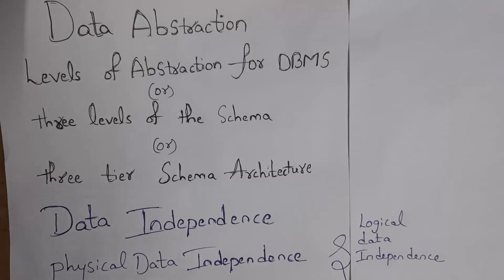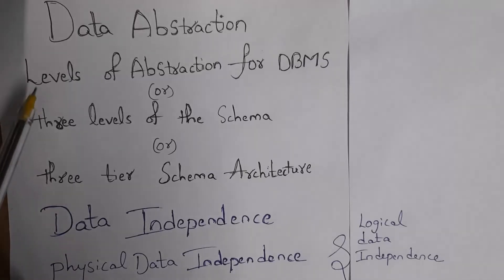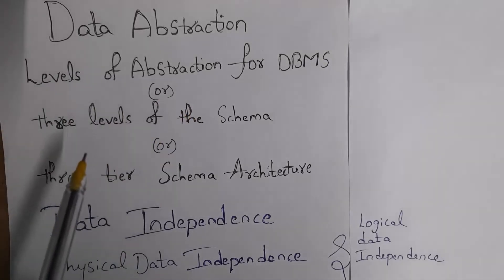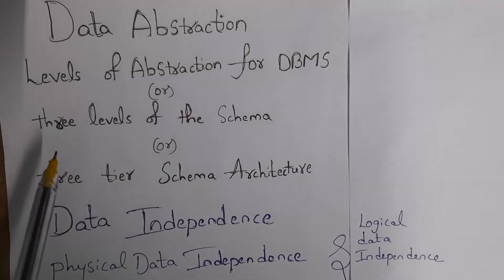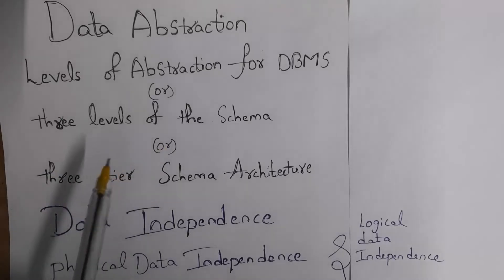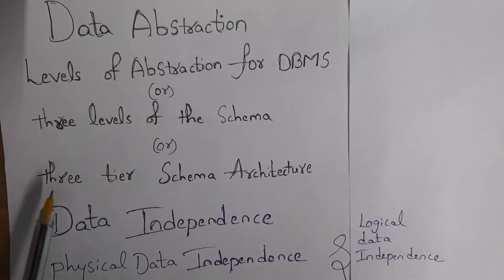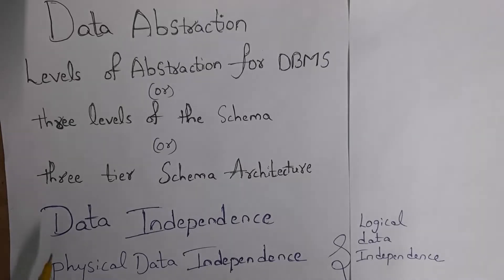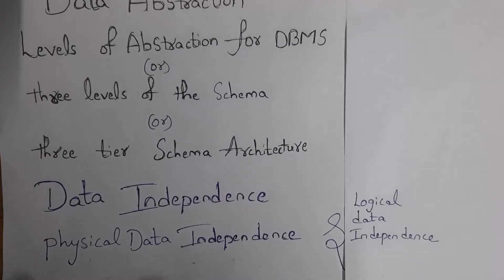Hi guys, welcome to my channel. In this video, I will be covering what is data abstraction and then I will explain levels of abstraction for DBMS. We also call this levels of abstraction as three levels of the schema, or we also call it as three-tiered schema architecture. Next I will explain data independency and what is physical data independency and logical data independency.